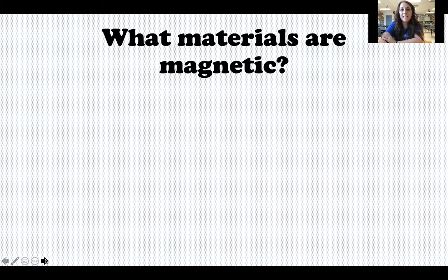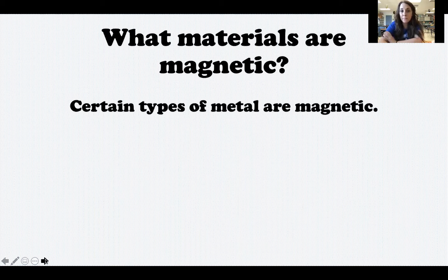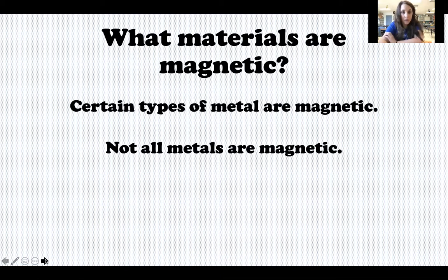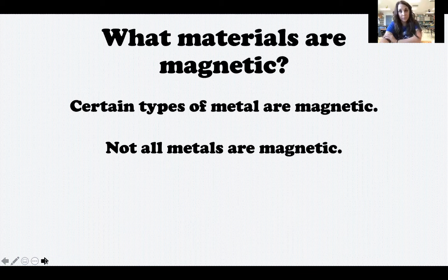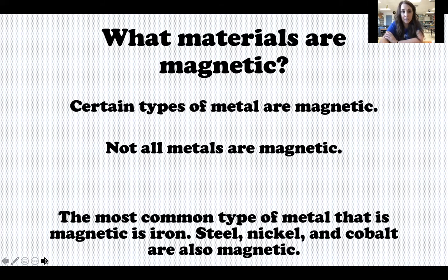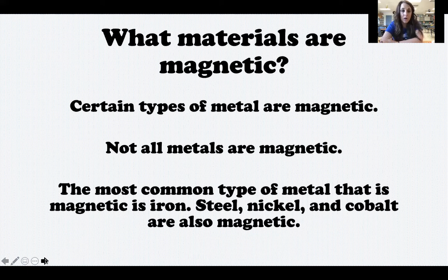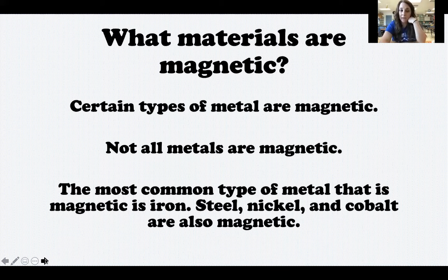So what types of materials are magnetic? Certain types of metal are magnetic, but not all metals are magnetic. Today we're going to see something made of metal that is not magnetic. The most common type of metal that is magnetic is called iron. There are also some other types — steel, nickel, and cobalt — that are also magnetic.